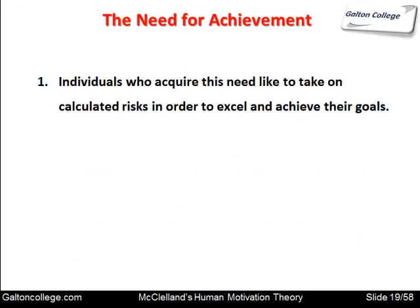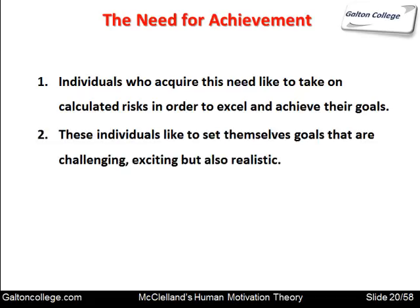The first need is the need for achievement. Individuals who acquire this need like to take on calculated risks in order to excel and achieve their goals. They like to take on a task that's difficult but achievable. These individuals like to set themselves goals that are challenging and exciting but also realistic. When they've done it, they like the applause and praise they get for having achieved that particular task.